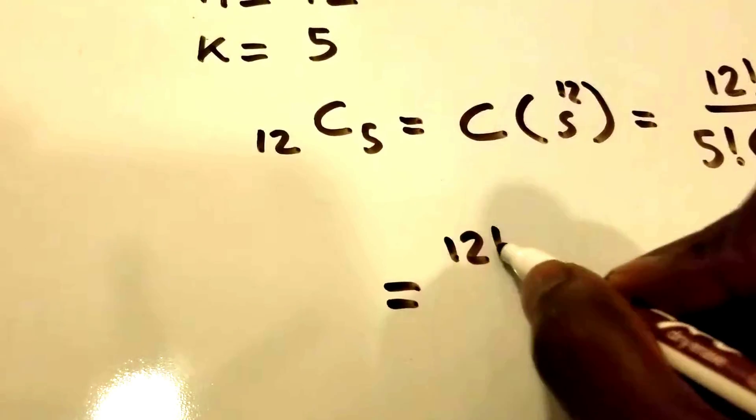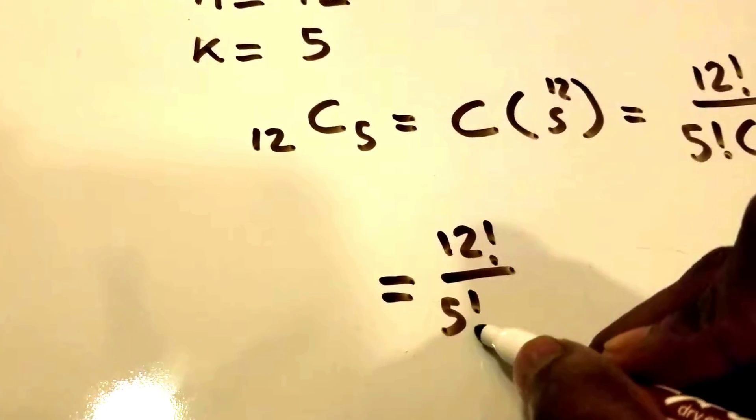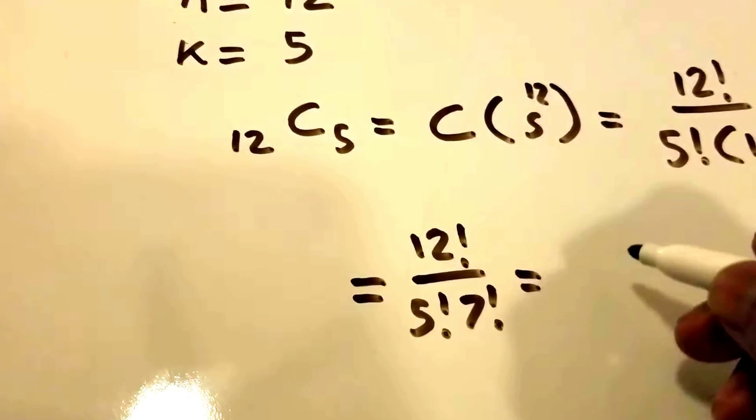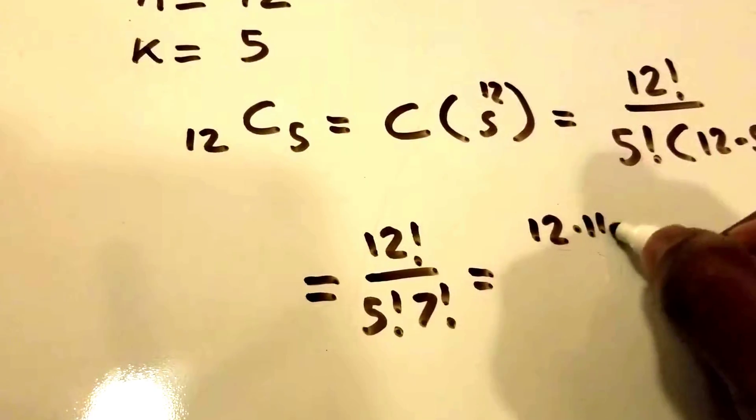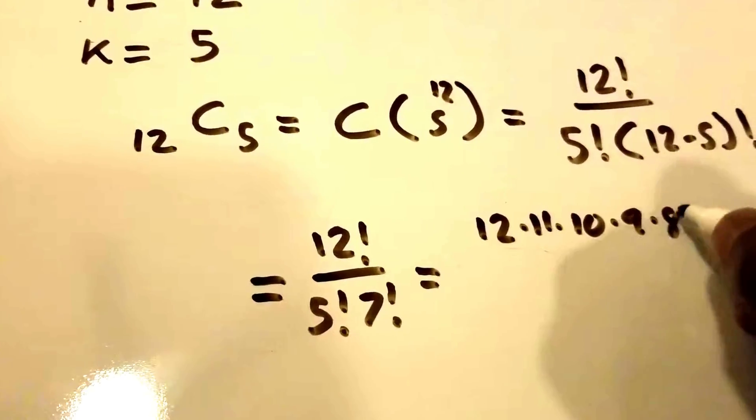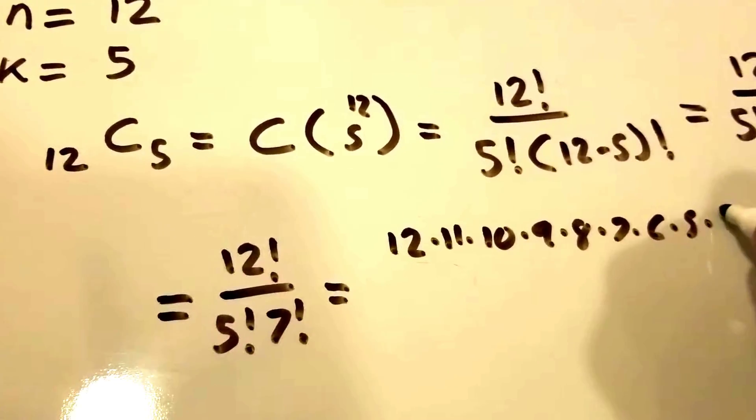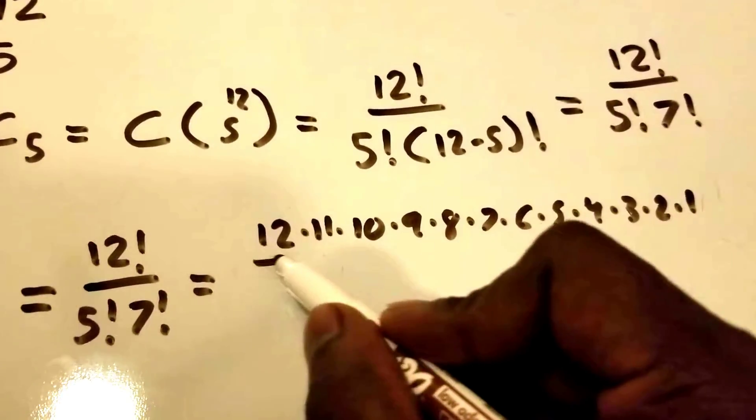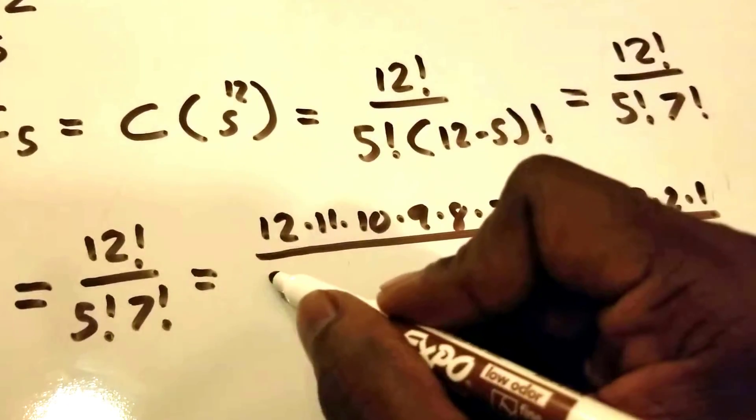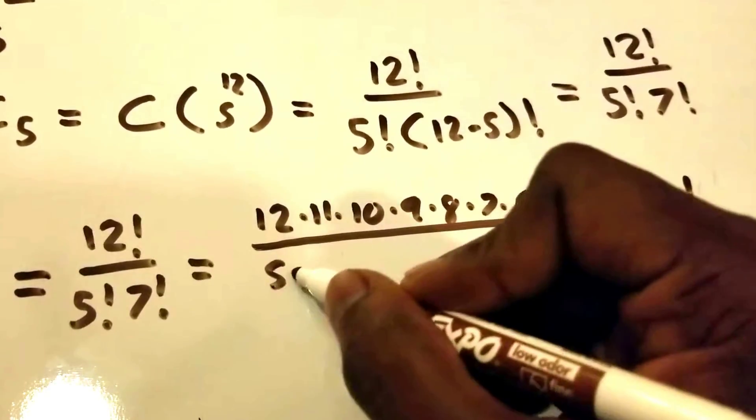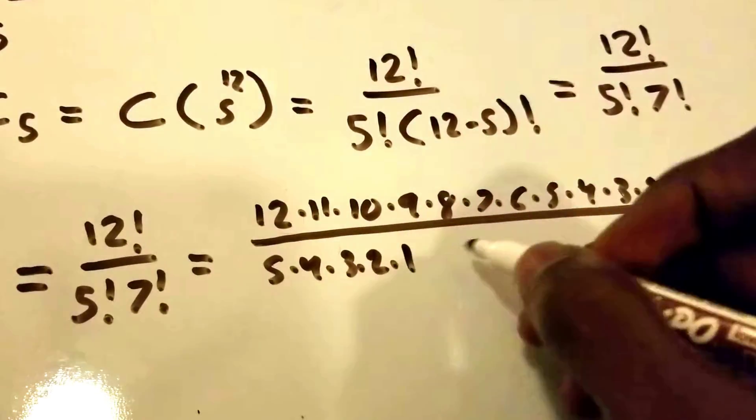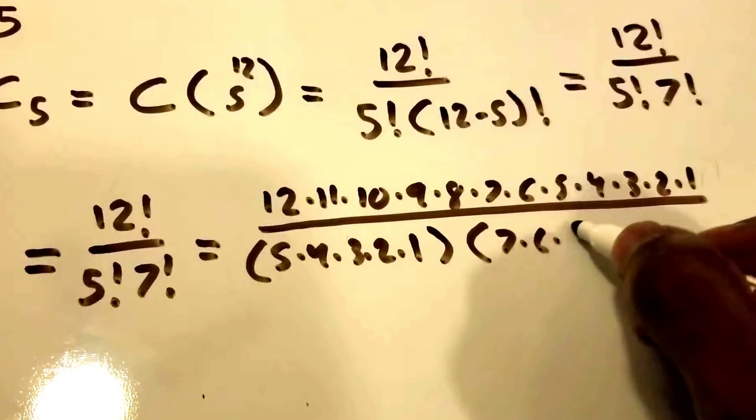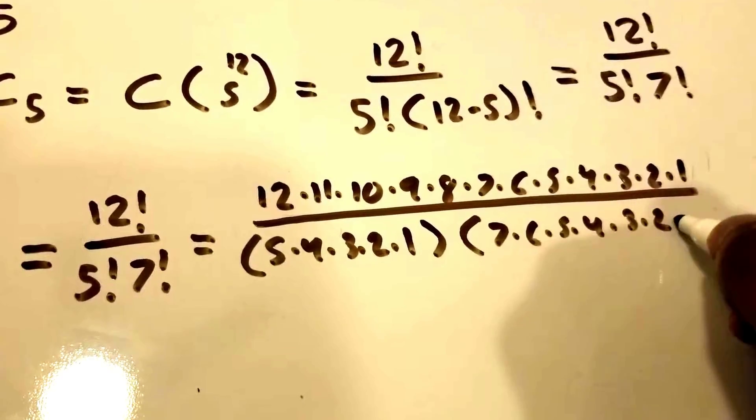We have 12 factorial divided by 5 factorial times 7 factorial. When we write this out, we get 12 times 11 times 10 times 9 times 8 times 7 times 6 times 5 times 4 times 3 times 2 times 1, divided by 5 factorial and multiplied by 7 factorial, which is 7 times 6 times 5 times 4 times 3 times 2 times 1.